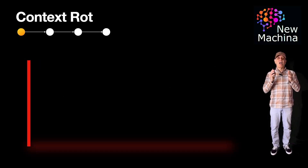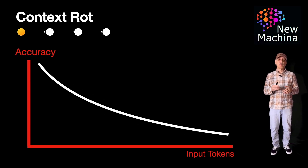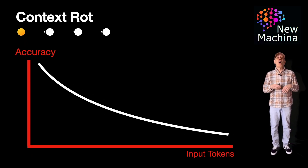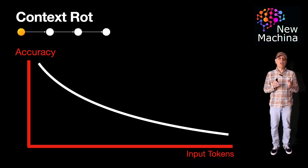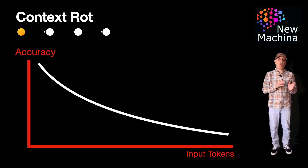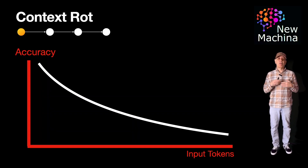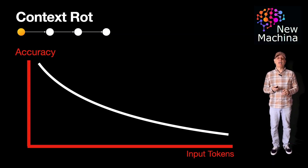What causes context rot? Attention drift occurs when LLMs lose focus on earlier parts of the text due to their limited context window. This can introduce inaccuracies as the model builds on previous potentially flawed outputs. To put it simply, context rot happens because the model can't remember everything and sometimes gets confused.